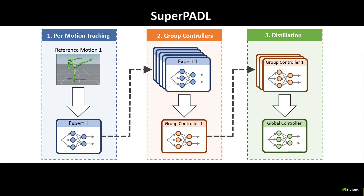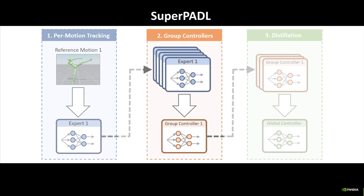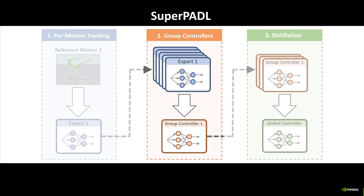SuperPattle consists of three stages. First, we train separate controllers for every motion clip in the dataset. Next, we partition the dataset into random groups and train a multi-motion controller on each group using a hybrid reinforcement learning and supervised distillation objective.